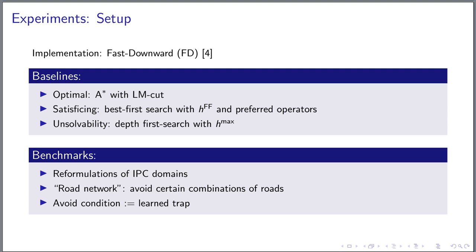To empirically evaluate and compare the different compilation and pruning methods, we did experiments in optimal and satisficing planning as well as for proving unsolvability. We collected benchmarks from various sources including reformulation of standard IPC benchmarks, some benchmarks for which we manually designed the avoid conditions and ones for which we set the avoid condition to a learned trap.